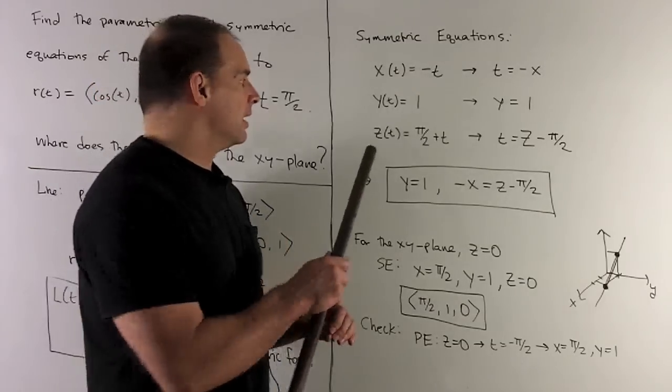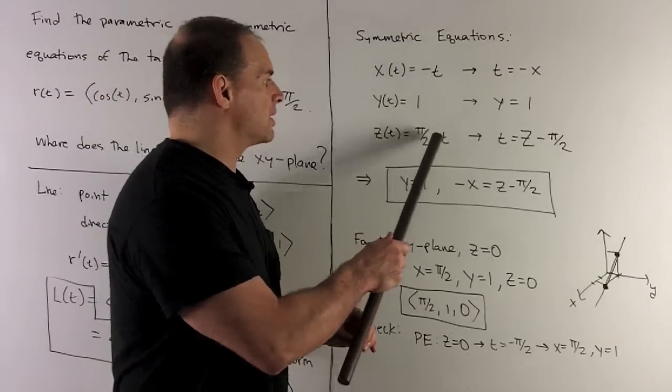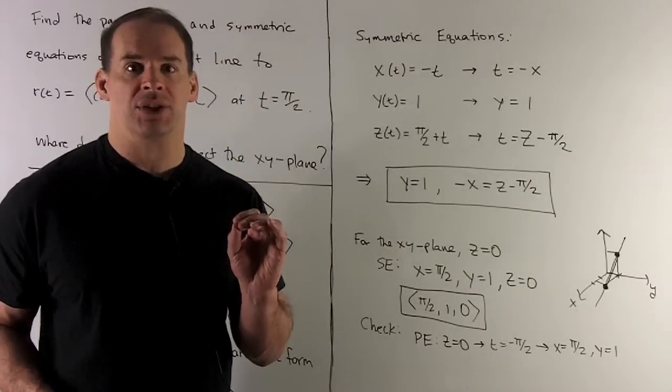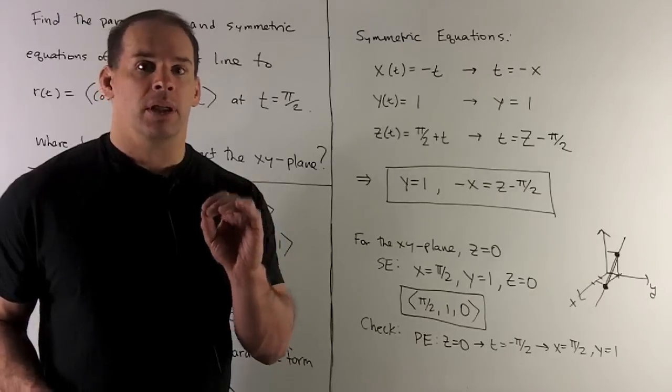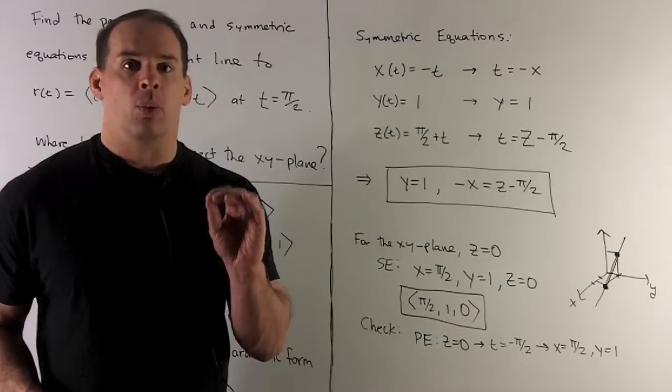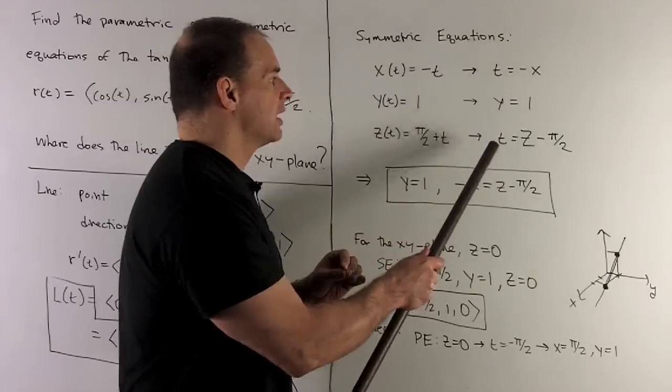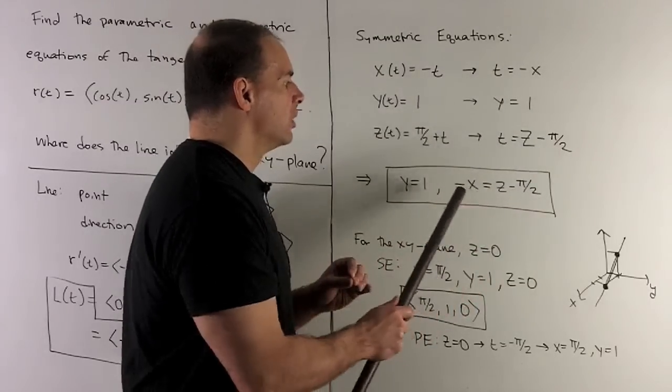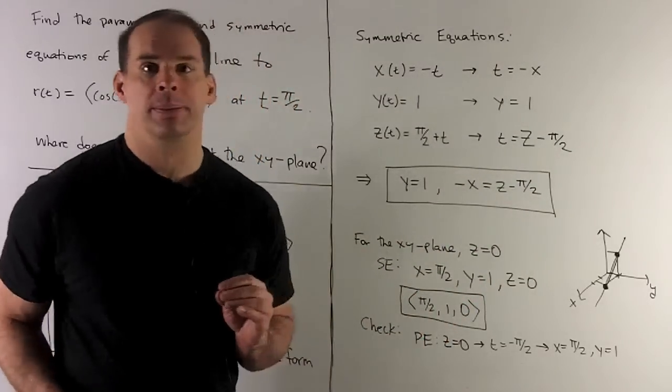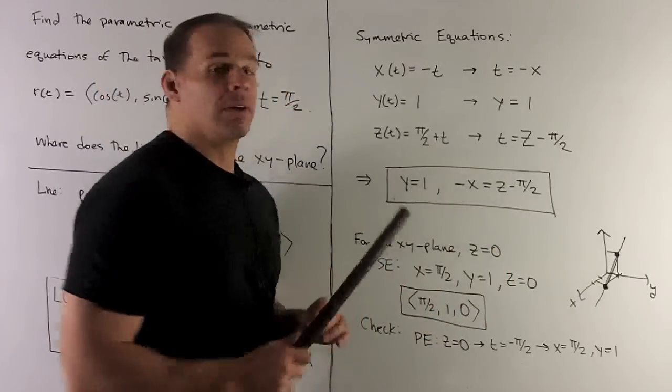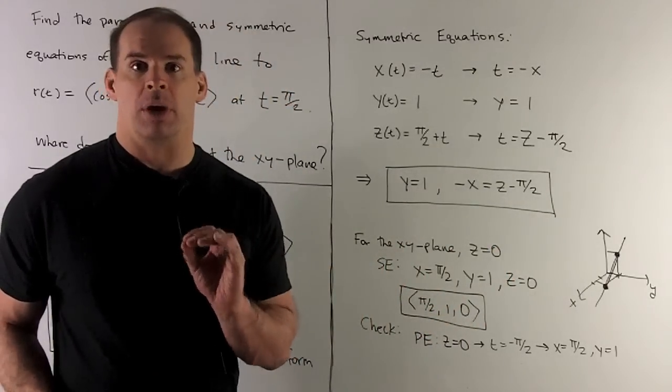And then we have z = π/2 + t, so t = z - π/2. All right, let's pull that apart. So y = 1 we just set aside, and then I'm going to have t = -x, t = z - π/2, so we'll set those equal to each other. So here we have the symmetric equations for our line, so there's no t present.